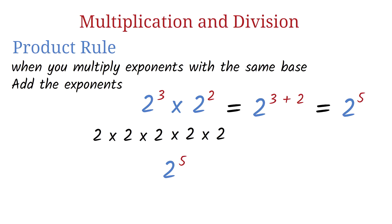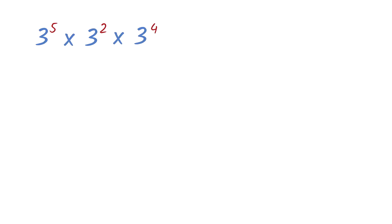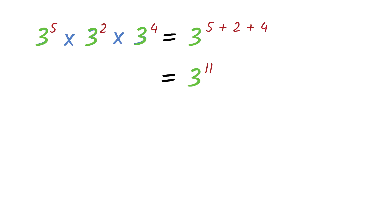Let's take another example. Simplify 3 exponent 5 times 3 exponent 2 times 3 exponent 4. The first thing we check is if the bases are the same — they all have a base of 3. Since the bases are the same, we can simply add the exponents: 5 plus 2 plus 4 equals 11. So we have 3 exponent 11 as our answer.